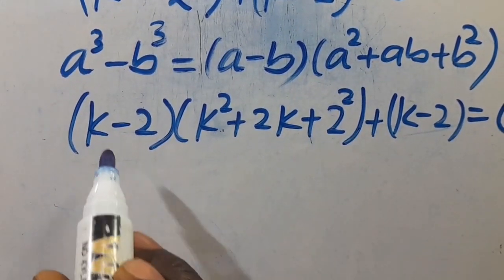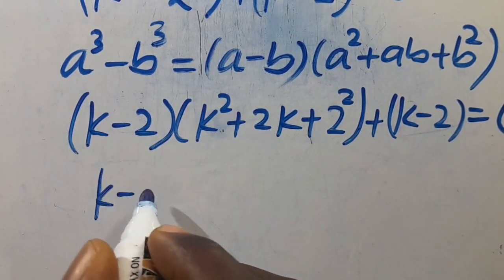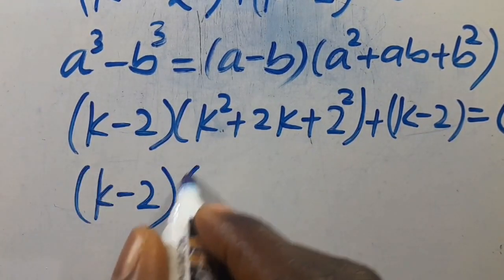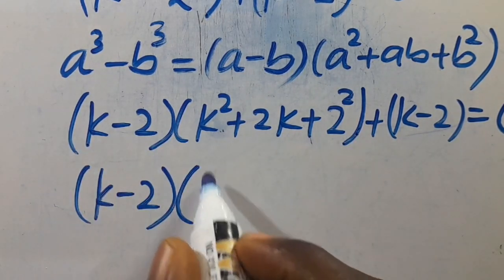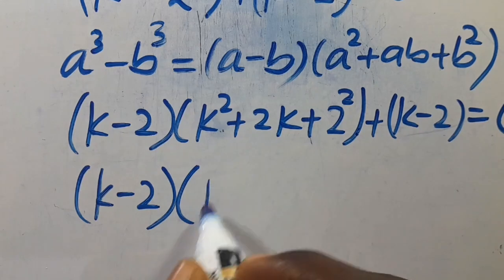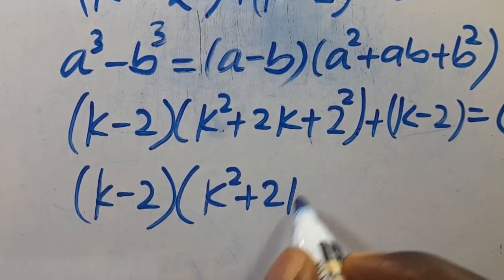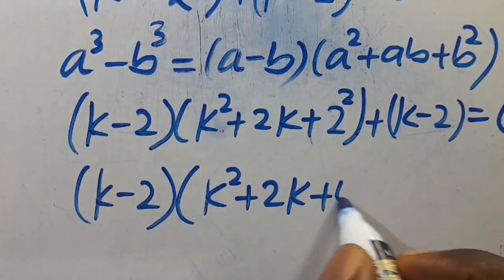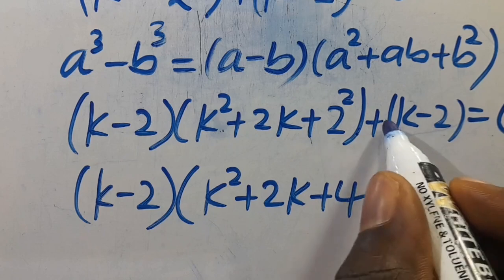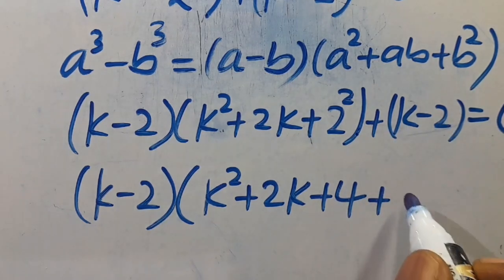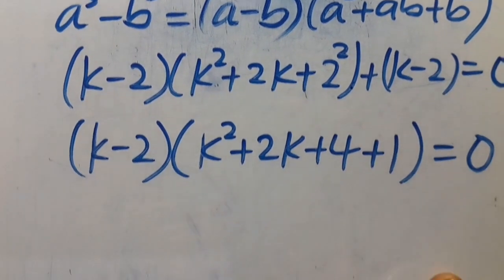From here, k minus 2 is common. We factor it out: k minus 2 is common to both groups. After dividing, we have k squared plus 2k plus 4 plus 1, and we set everything equal to 0.